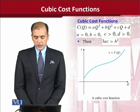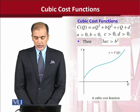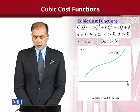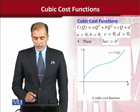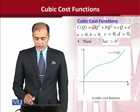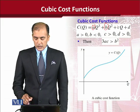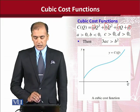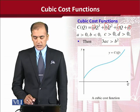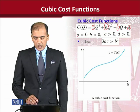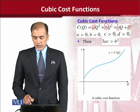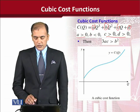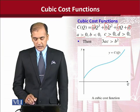In this example we can see that a cubic cost function is given in a symbolic manner where the coefficients are a, b, c and d, and the independent variable is q. Now, the coefficients a, c and d are all positive, and only one of them, that is b, is negative.